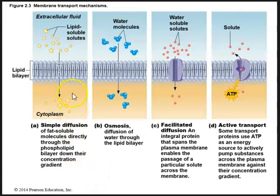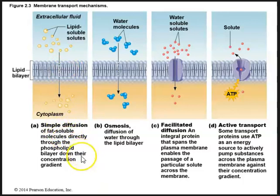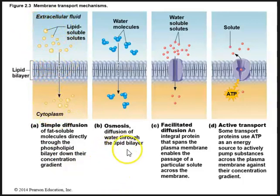In the diagram we can see simple diffusion of fat-soluble molecules going directly through the phospholipid bilayer down their concentration gradient — from an area of high concentration to low concentration. Osmosis is the diffusion of water through the lipid bilayer. Again, these two types of membrane transport do not require ATP or energy.